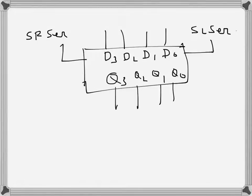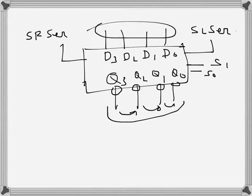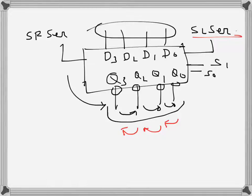This is a block diagram of a 4-bit bidirectional shift register. These are the four outputs and these are the inputs. As discussed in a previous video, it can have four operations depending on the select pins S0 and S1: hold, where data is held with the next clock and nothing changes at output; right shift, where Q3 goes to Q2, Q2 goes to Q1, Q1 goes to Q0; and left shift, where Q0 goes to Q1, Q1 goes to Q2, Q2 goes to Q3, and SL serial comes to Q0.